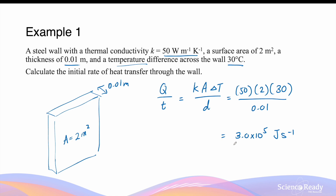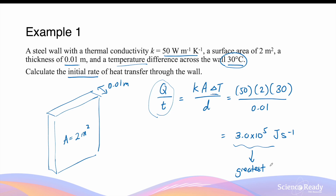It's important to understand that this number is the initial rate of heat transfer, which decreases as the two systems on either side of the wall reach thermal equilibrium — that is, they come to the same temperature. As the temperature difference across the wall decreases, and since the rate of energy transfer is directly proportional to delta T, when delta T decreases, so will the rate of heat transfer. So if all other variables remain constant, you would always expect the initial rate of heat transfer to be the greatest, and this will decrease over time as the two systems approach thermal equilibrium.